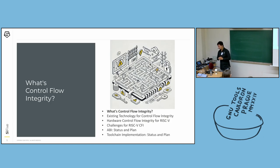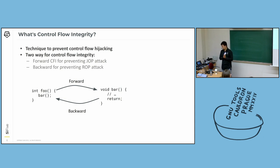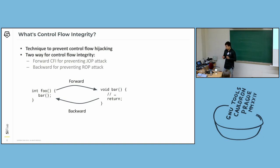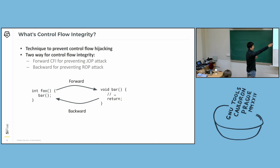CFI is a technology designed to prevent hackers from hijacking your control flow to do evil things. We will provide a brief introduction and some examples demonstrating how hackers attack your program. We classify CFI into two different kinds: one is forward and another is backward. The general idea is forward covers indirect call, indirect jump, or something like that. Backward covers something like a function returning to somewhere.